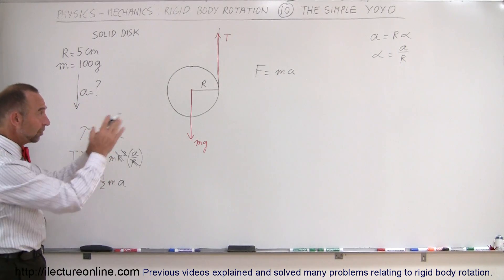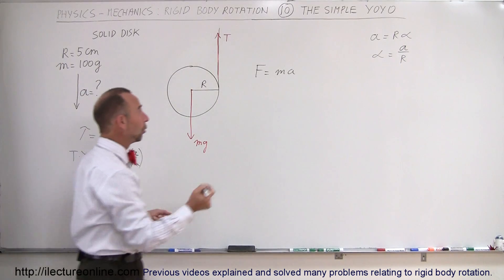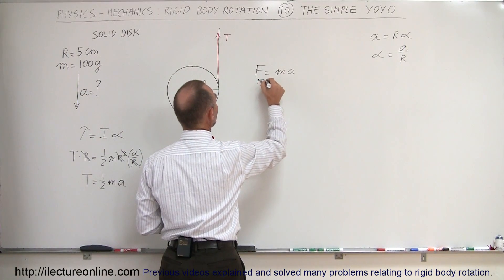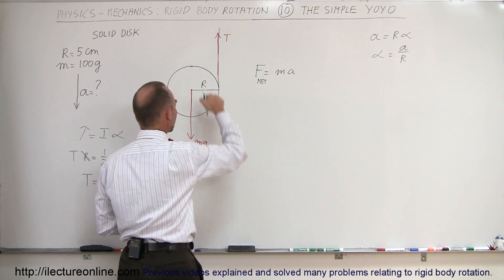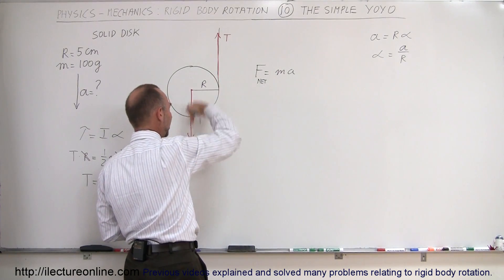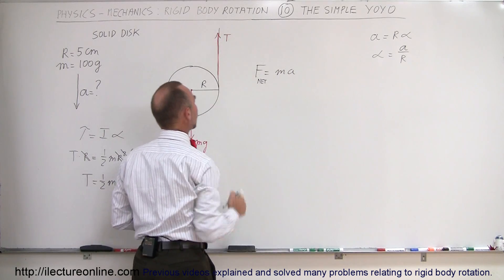Now we go to the second equation, F equals MA, or more precisely, F net—the net force on the yoyo equals MA. The net force will be equal to MG, the force that will accelerate it downward, minus the tension, the force upward.